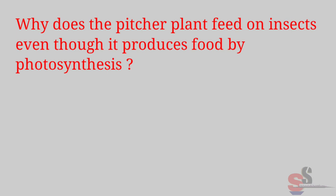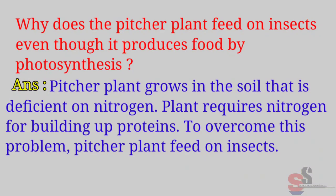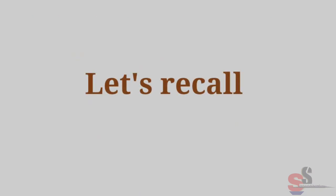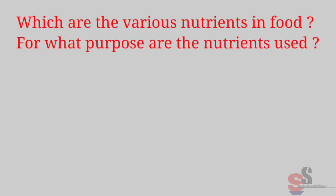Use Your Brain Power — Textbook page 29: Why does the pitcher plant feed on insects even though it produces food by photosynthesis? Answer: Pitcher plants grow in soil that is deficient in nitrogen. Plants require nitrogen for building up proteins. To overcome this problem, pitcher plants feed on insects.